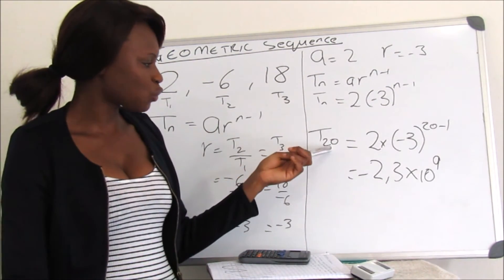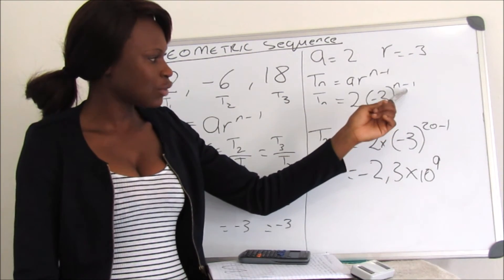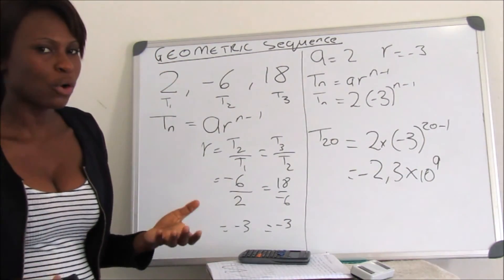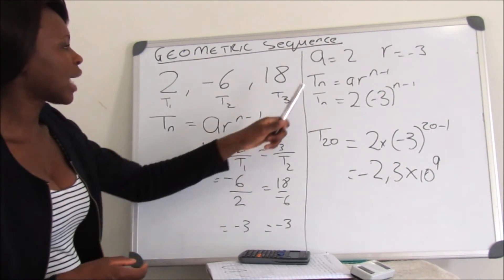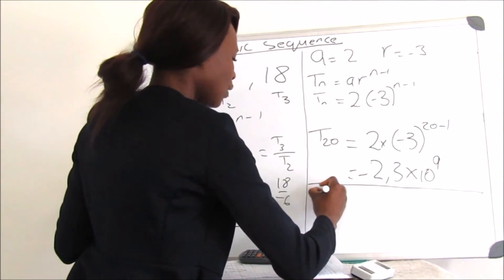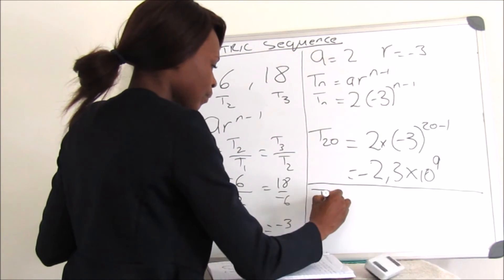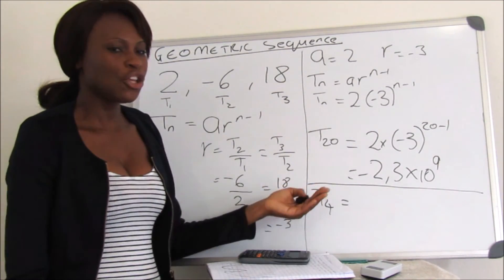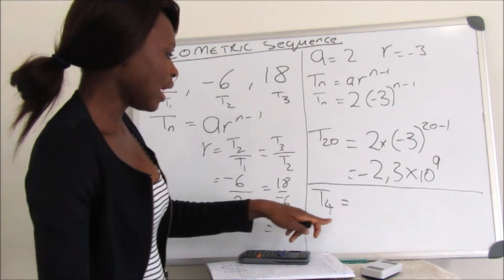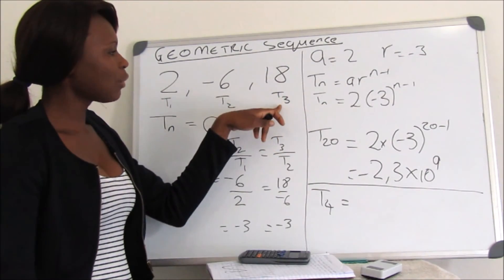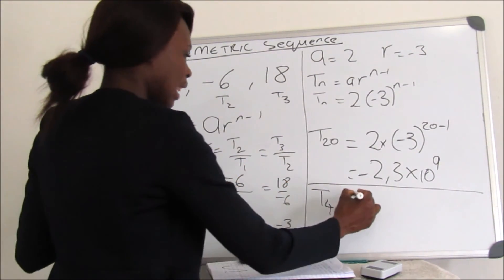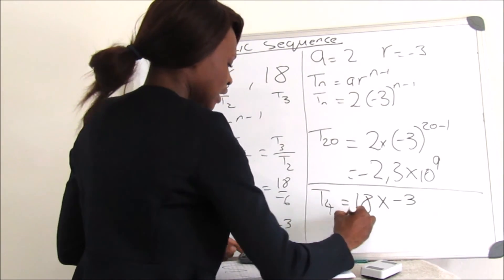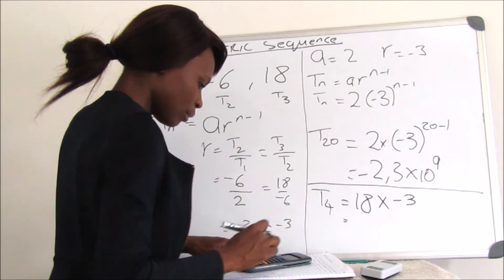Just for interest, if we were asked to find T4: to get the next term, we use the previous term multiplied by the common ratio. Since T3 equals 18, we say 18 multiplied by our common ratio of negative 3, which gives negative 54.